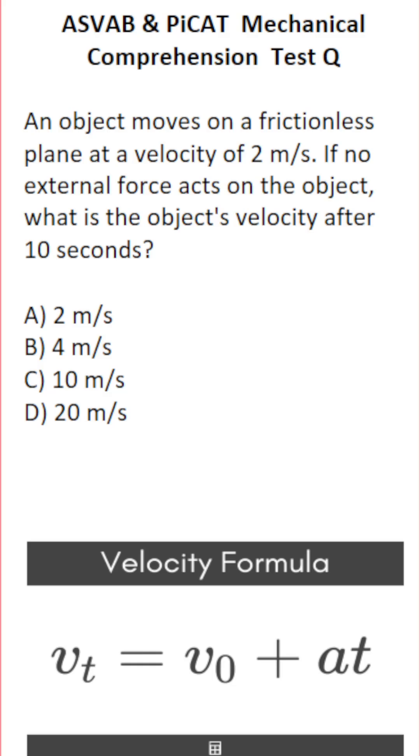Let's take a look at the velocity formula and see how this relates to Newton's first law of motion. Velocity, the final velocity Vt, is going to be equal to your initial velocity V0, plus acceleration times time.